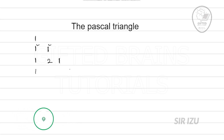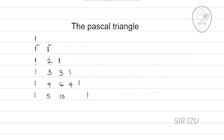For the next row: begins with 1 and ends with 1. Add 1 and 2 to get 3, and 2 and 1 to get 3, giving 1, 3, 3, 1. For the next row: 1 plus 3 gives 4, 3 plus 3 gives 6, 3 plus 1 gives 4 — so 1, 4, 6, 4, 1. Continuing: 1 plus 4 gives 5, 4 plus 6 gives 10, 6 plus 4 gives 10, 4 plus 1 gives 5 — so 1, 5, 10, 10, 5, 1.